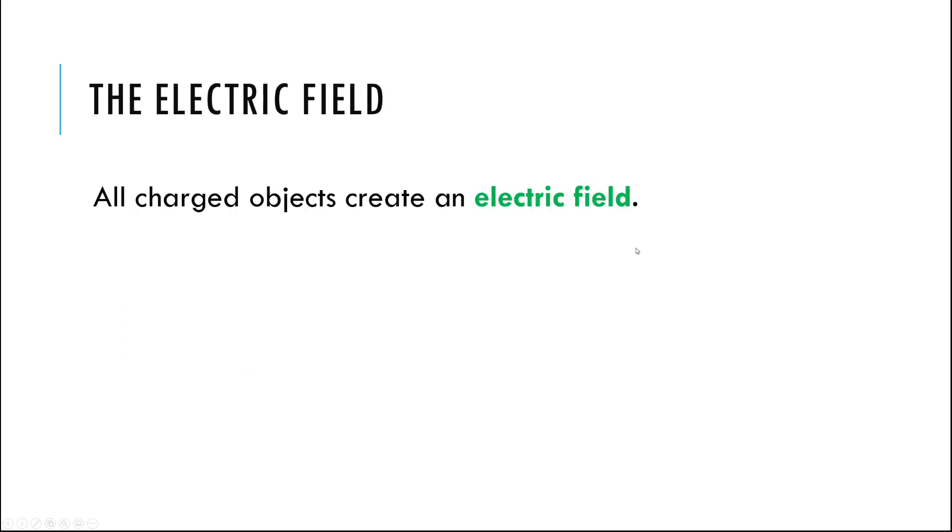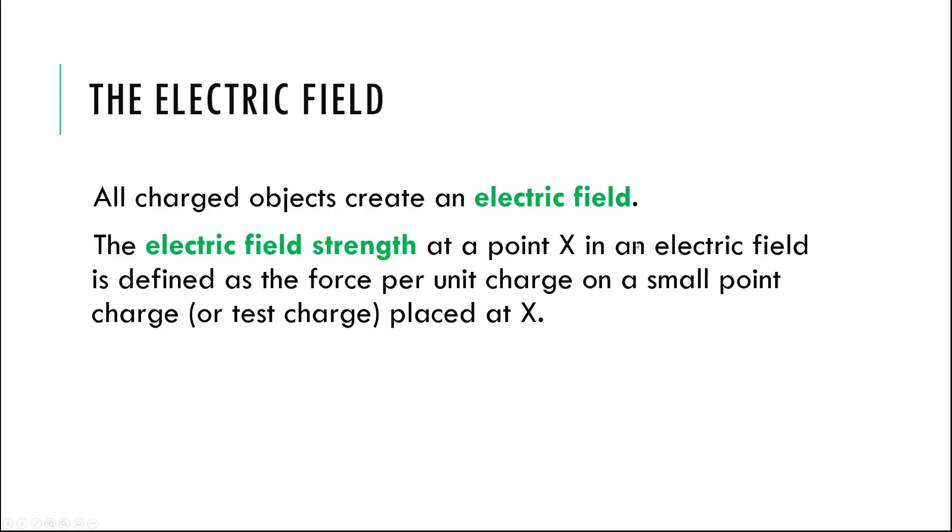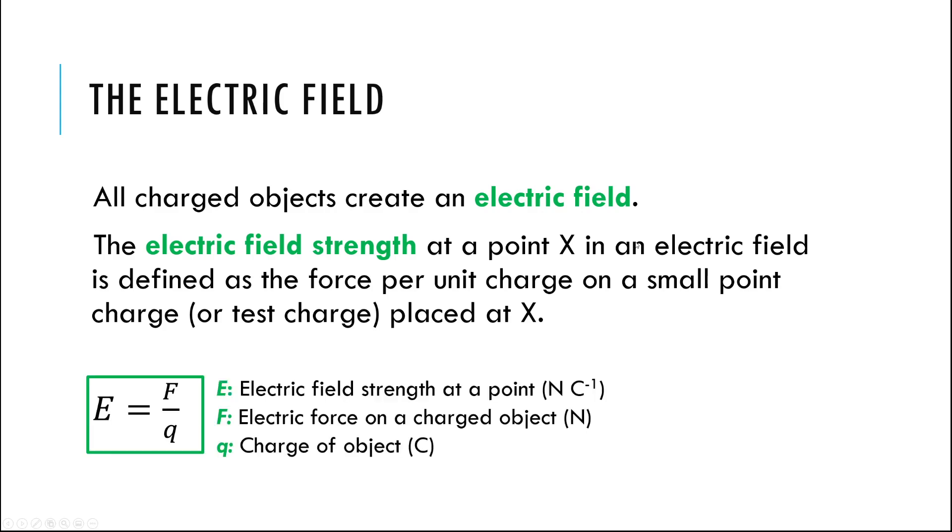And one other equation worth going over in this section because it's very similar to the lug stuff is our definition of an electric field. You'll notice the way we define it is almost identical to how we define a gravitational field. So just like a mass creates a field all around it that we define as the force per unit mass acting on a small point mass in the field, we do the same thing with an electric field. We say these pluses and minuses can push and pull on each other at a distance because they create electric field all around them. The size of that electric field is defined as the force per unit charge acting on a small point charge placed at that point in the field.